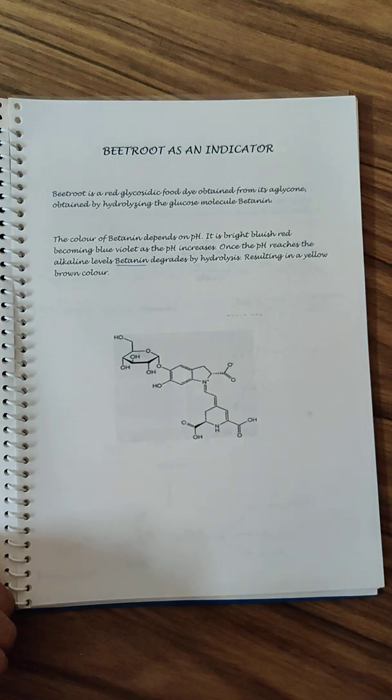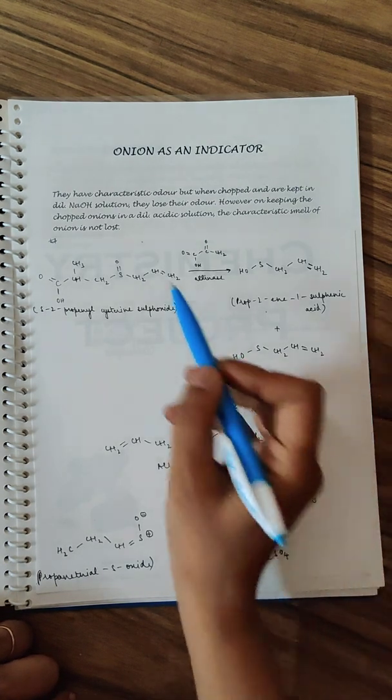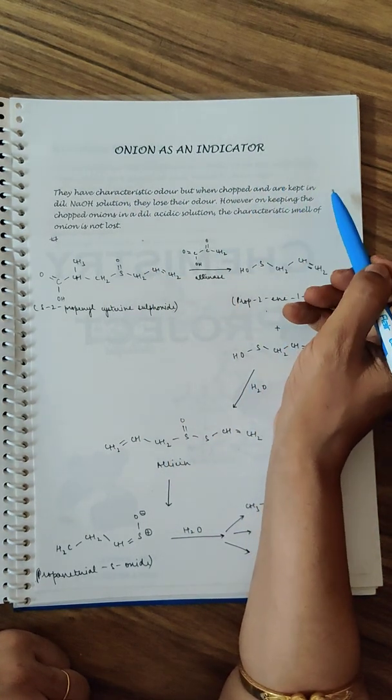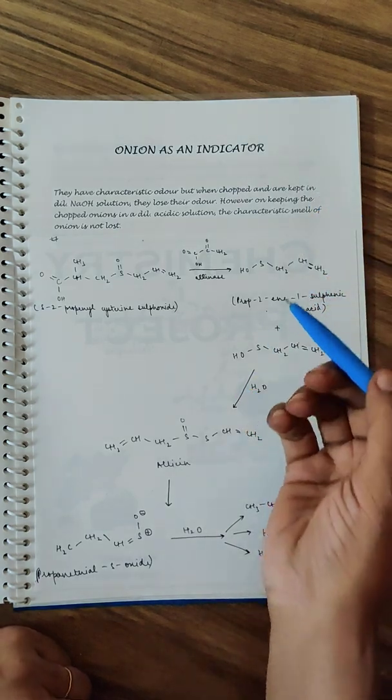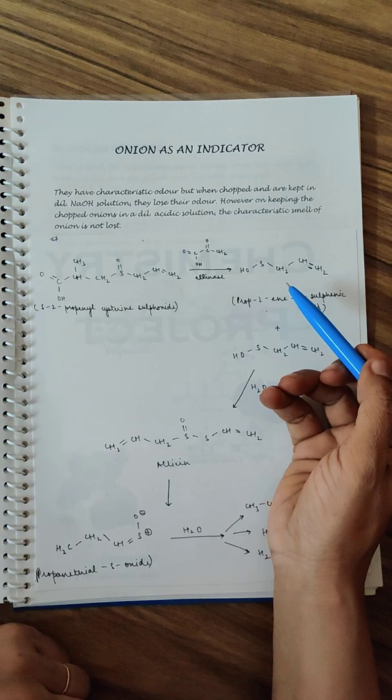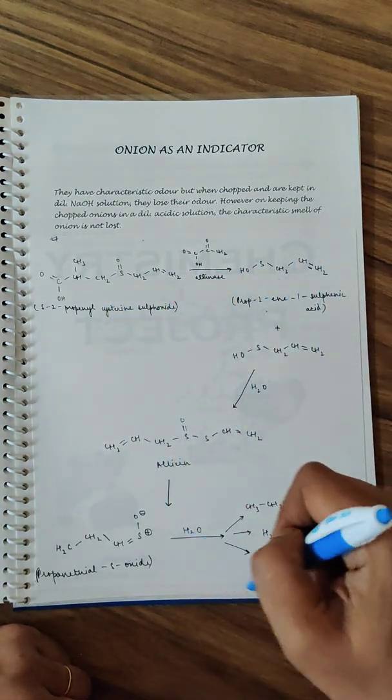These compounds have the components - in the presence of pH they do change their colors. The betanine is the component which is found, by hydrolysis it changes color. Similarly, the information from Google for the onion as an indicator is also being given - how does it change the color in your acidic medium, basic medium, and what is the main component of your onion peel.